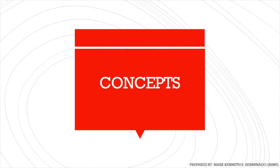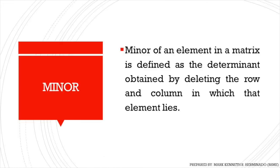First is the concepts. Minor. The minor of an element in a matrix is defined as the determinant obtained by deleting the row and column in which that element lies. Sa madaling salita, makukuha natin ang minor by deleting the entire row and column kung saan nakalagay yung element.